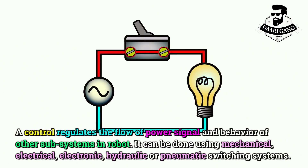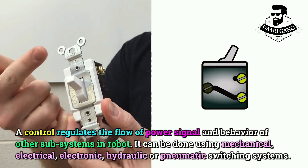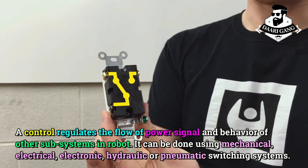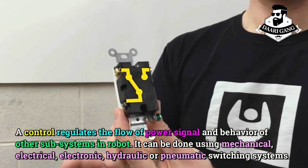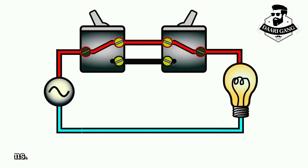A control regulates the flow of power signals and behavior of other subsystems in a robot. It can be done using mechanical, electrical, electronic, hydraulic, or pneumatic switching systems.